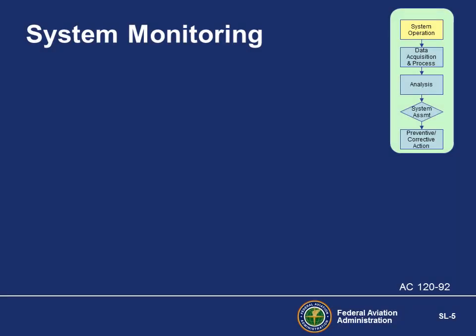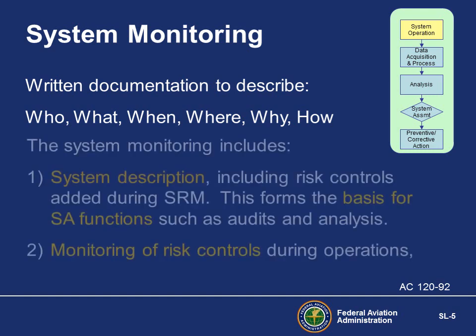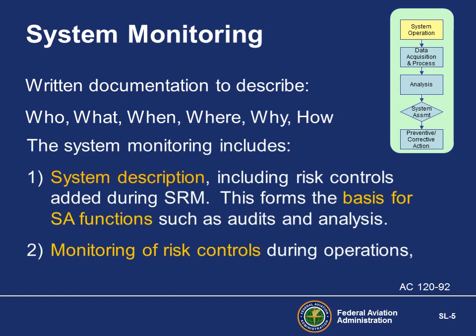The first step of Safety Assurance is to gain a fundamental understanding of the domain of the process — the system. This requires a comprehensive system description: the who, what, when, where, and how of a system that is documented as it functions day to day. It's important to understand how the system works and what tasks are involved in key processes. For example, during operation, what are the critical activities that must occur in flight operations, maintenance, ground operations, etc. The system description should include existing risk controls.